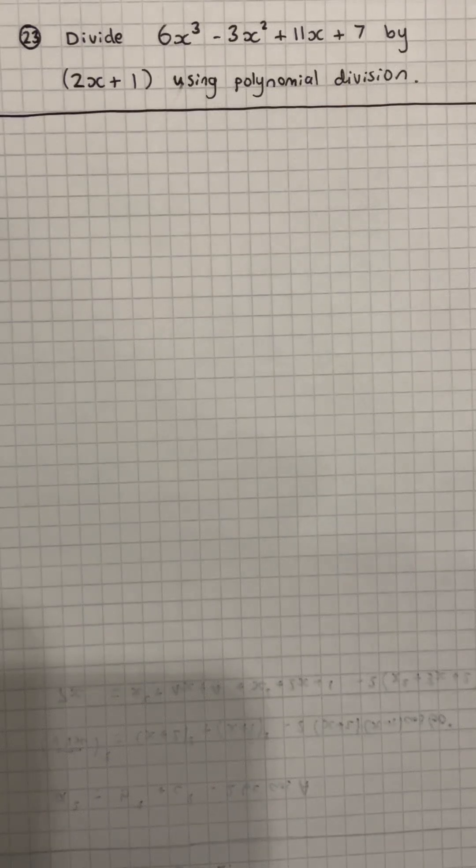Today, we are dividing 6x cubed minus 3x squared plus 11x plus 7 by 2x plus 1, and we're going to be using polynomial division.